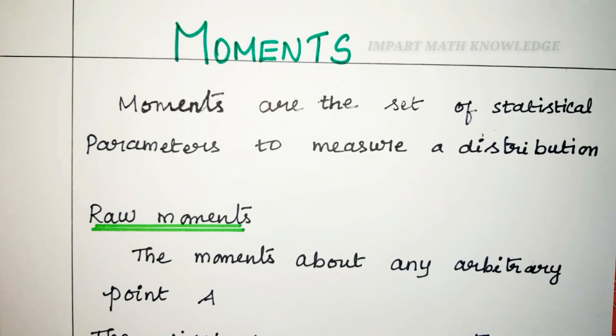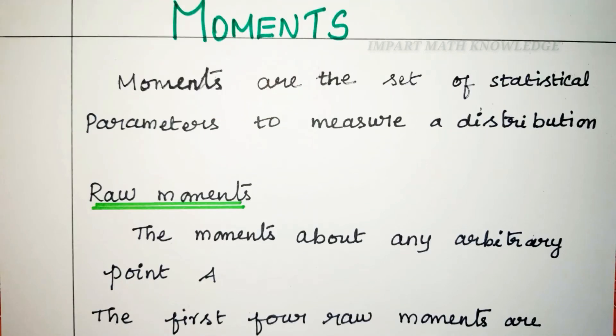Moments are the set of statistical parameters to measure a distribution. Moments are of two types: one is raw moments, and another one is central moments.